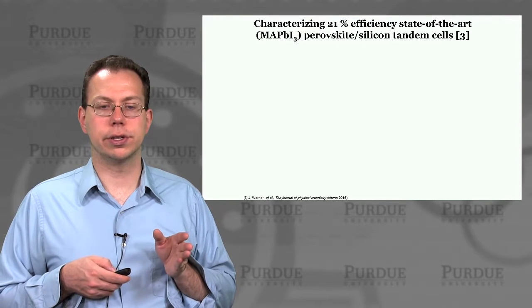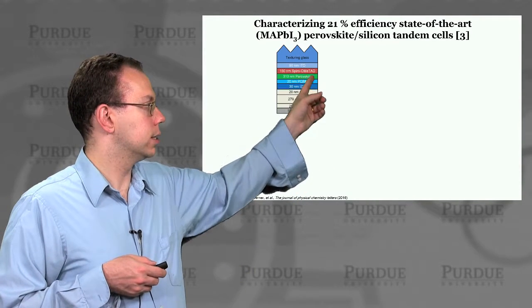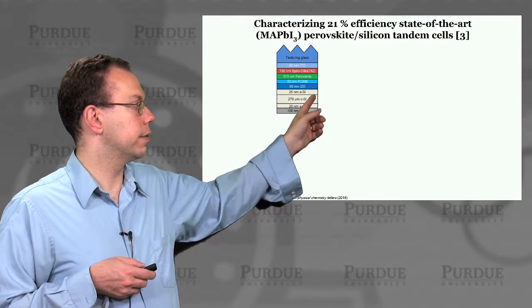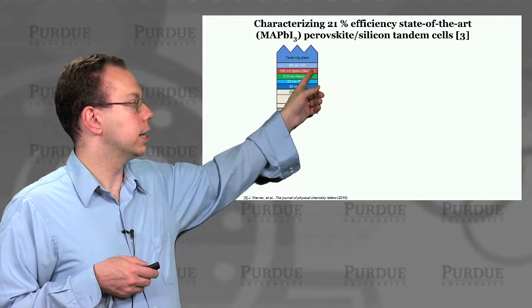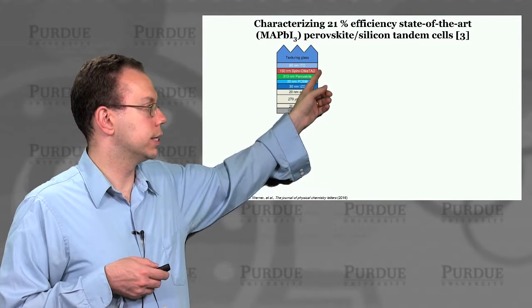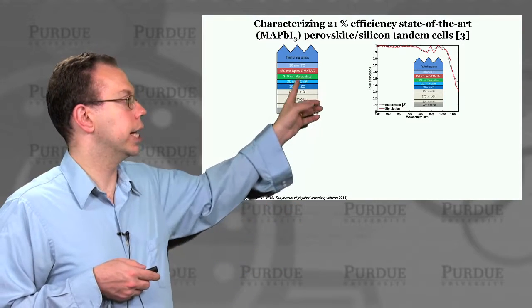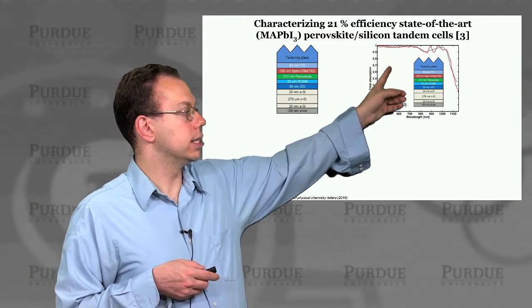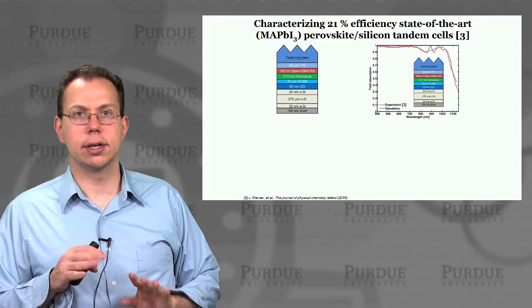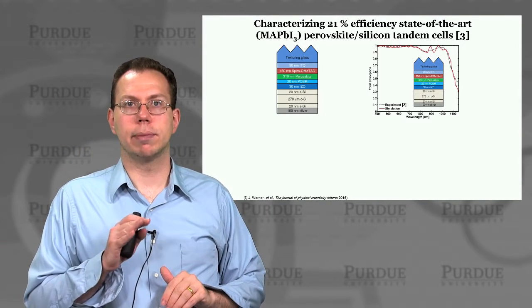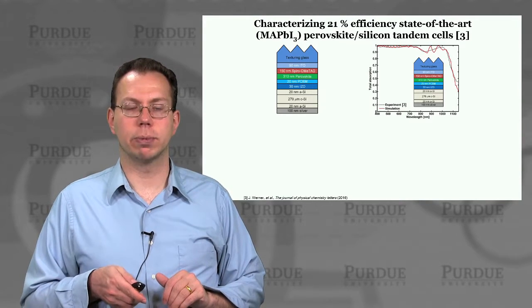Moving to the state-of-the-art perovskite-silicon tandem cells recently demonstrated, they feature the crystalline silicon HIT (heterojunction intrinsic thin-layer) cell with perovskite on top. The absorption is actually really high over almost the whole spectrum. The experimental dotted line and our simulation predictions closely match. There are a few oscillations indicating slight thickness variations that smooth out some of the Fabry-Pérot oscillations.